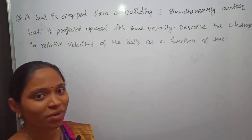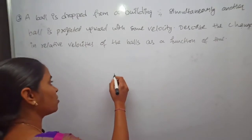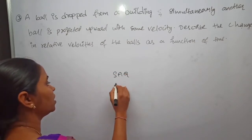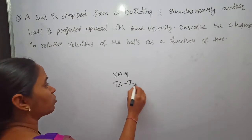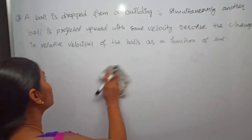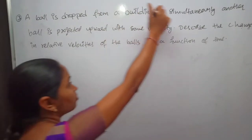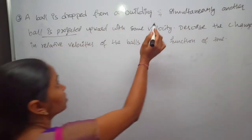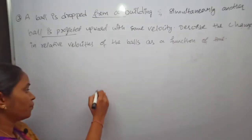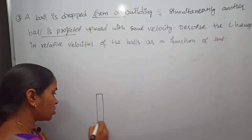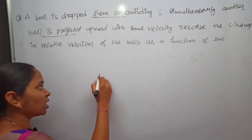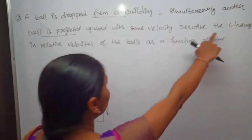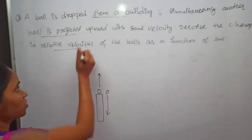Hello students, welcome to Swapna Physics Classes. In this lecture I am going to explain one more important short answer question for your first year intermediate IPE examination. The question is: a ball is dropped from a building; simultaneously another ball is projected upward with some velocity. We have two balls — one projected vertically upward and the other dropped from the building. Describe the change in relative velocities.